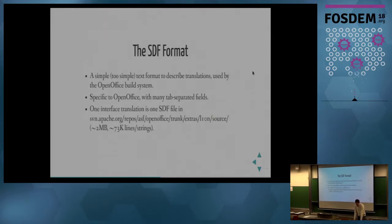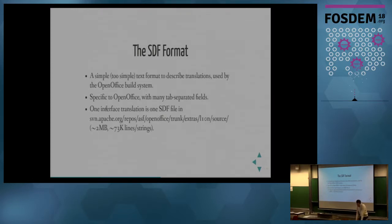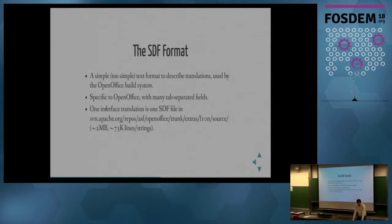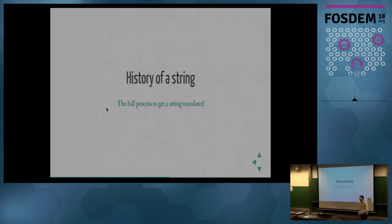The SDF format is used by the build system and is specific to OpenOffice, owing to the historic tradition of the OpenOffice codebase. One interface translation is one SDF file, so the Italian translation is one file — two megabytes and about 73,000 lines or strings. It is highly impractical for editing. Even though it is theoretically possible to go there, edit one string, save and rebuild OpenOffice and have it work, it will not last long since it will get overwritten.